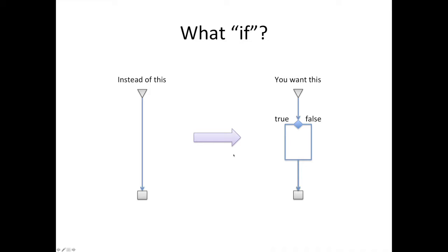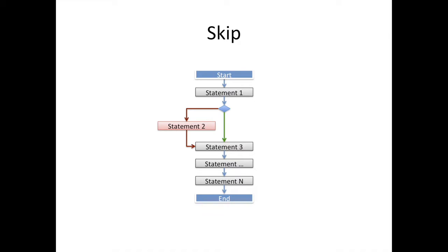That is called flow control — this general idea in which, instead of going straight, you can branch and take different paths in your program. It's called flow control because you can think of how your program flows: when it goes this way, when it goes that way. The most popular one you're going to see is the if statement, which is very common in programming.